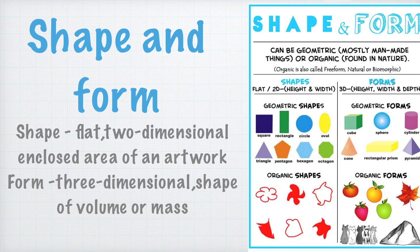Shape in the visual arts is a flat, two-dimensional enclosed area of an artwork. It can be created through line, texture, and color. Shape has height and width. It can be geometrical, like square, rectangle, circle, oval, and triangle. It can also be organic — organic shapes are found in nature.